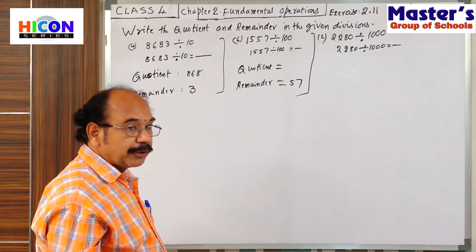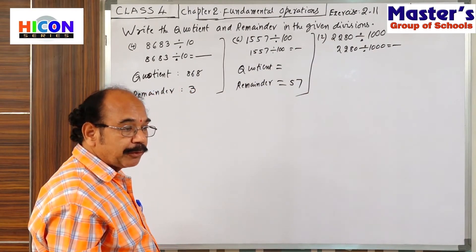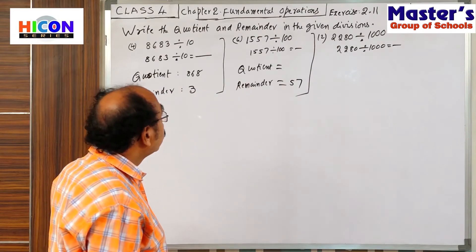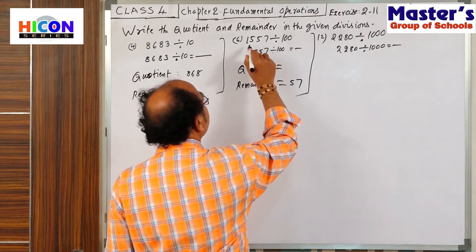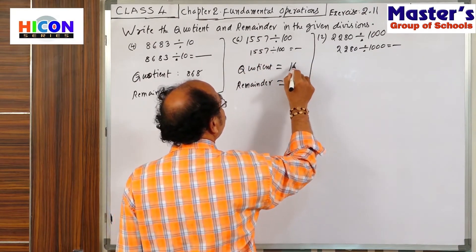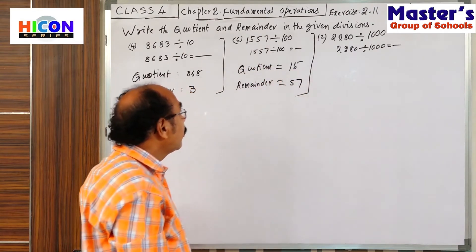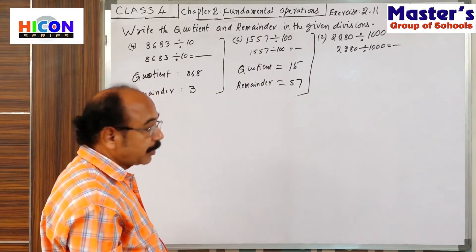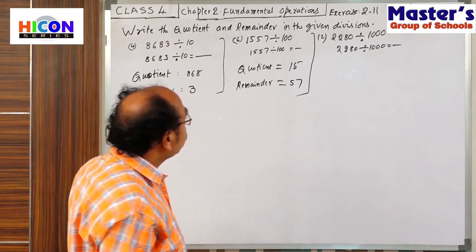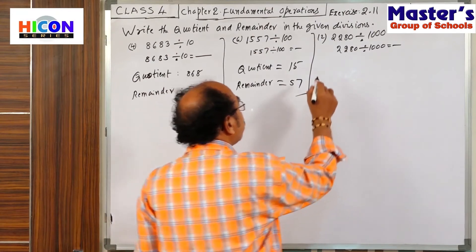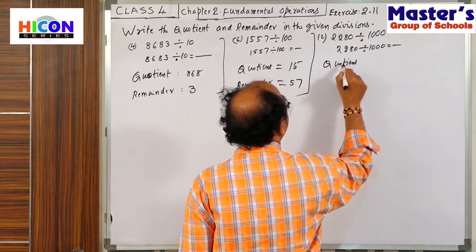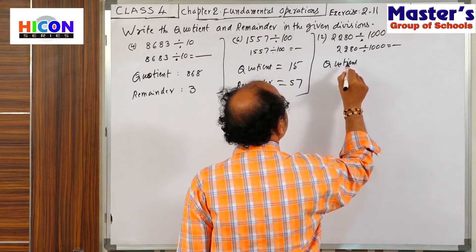What about the quotient? The number formed by the remaining digits of the dividend. The remaining is 1 and 5, that means 15. So, 15 is the quotient.